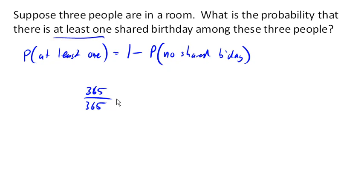Now the second person, in order for them to have a different birthday, then out of the 365 days in the year, they're going to have to have a different one. So they only get 364 choices. And then our third person in the room is only going to get 363 choices. And so this is the probability of no shared birthday, the probability that each person has a different birthday.